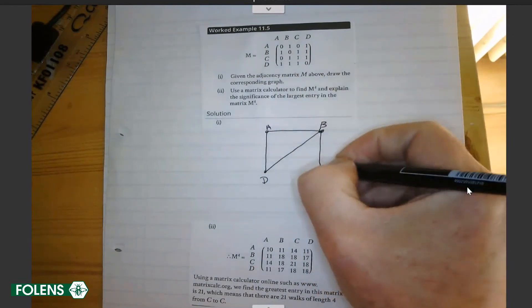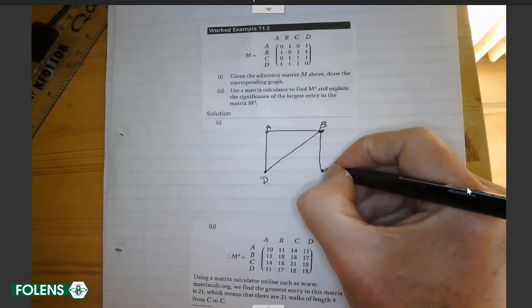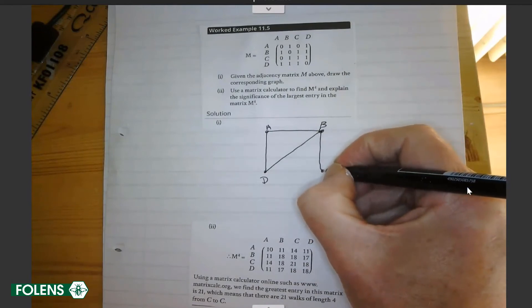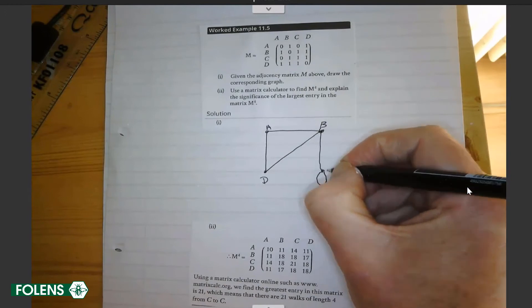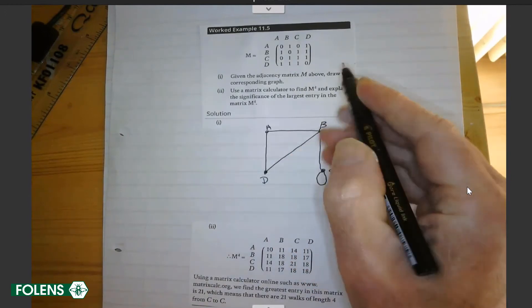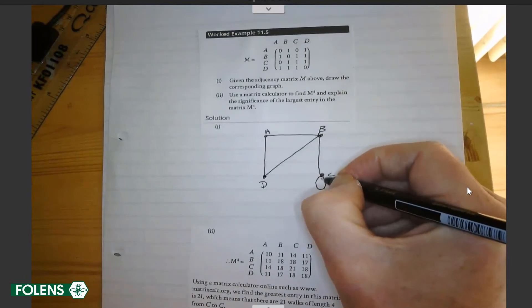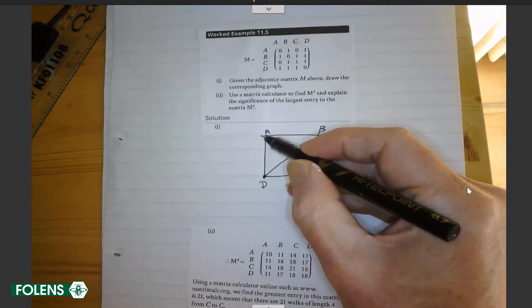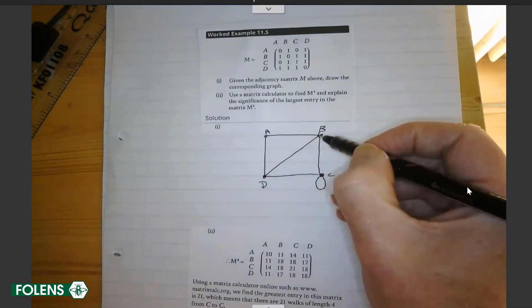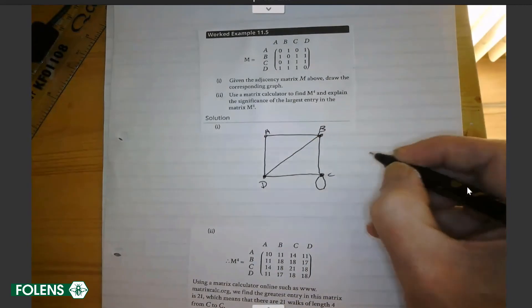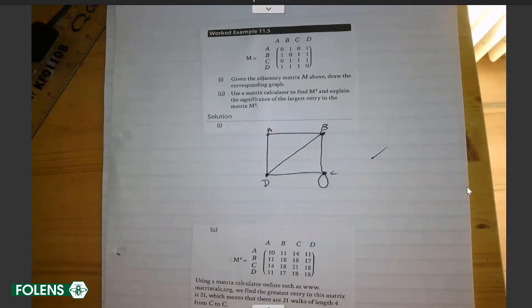Now C, there are no links to A, that's correct. From B, there's one, that's already there. To C, there is one - there's your loop from C to C. And from C to D, there is one, so we must put that in. Now, from D to A, there's one already there. From D to B, there's one. From D to C, there's one. And there is no loop from D to D. That is the corresponding graph.